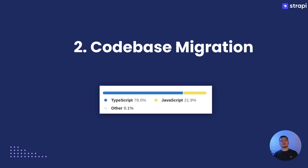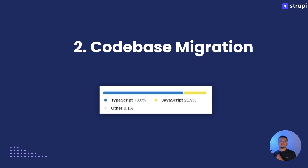One of the biggest things holding us back from enhancing TypeScript support was the fact that Strapi itself was written in plain JavaScript. That's no longer an issue. With Strapi 5, the codebase is almost entirely written in TypeScript. That was a huge step and a lot of work, but it means TypeScript support for user-facing APIs will now get better and better over time, very quickly.